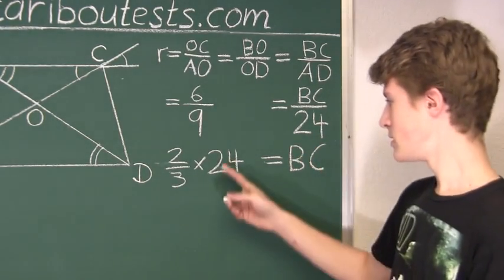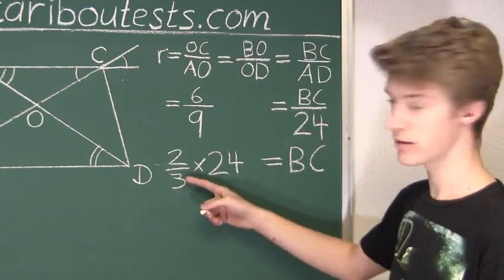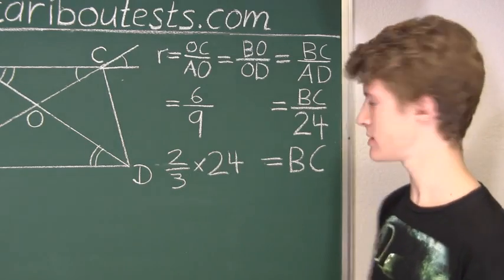Okay, so 24 over 3 is 8, to get rid of the denominator, and 8 times 2 is 16.